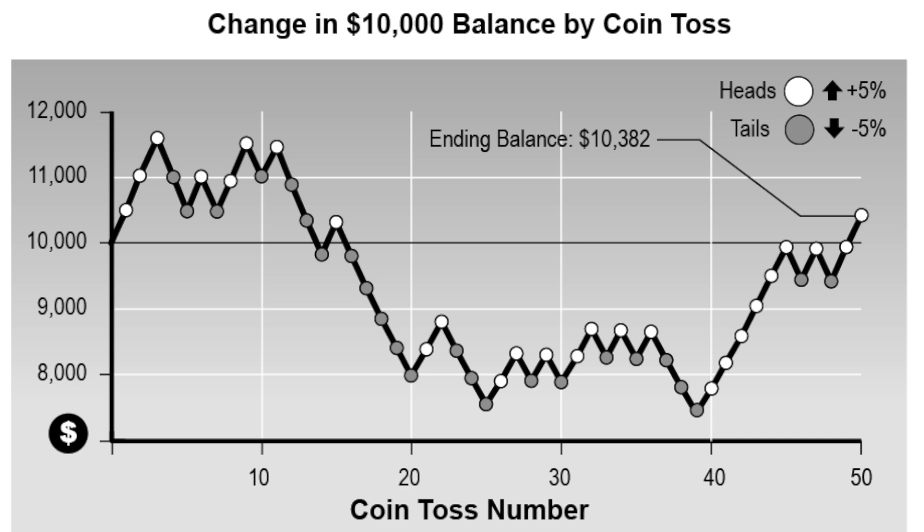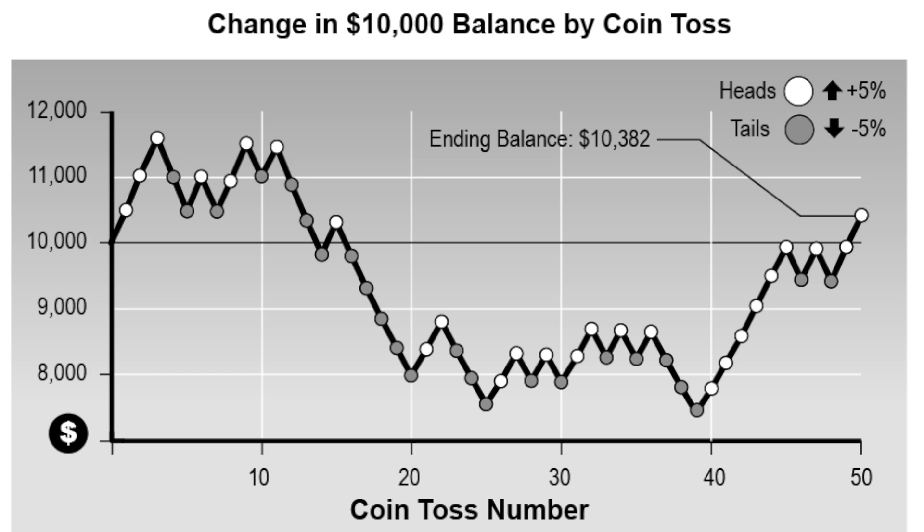We had three head flips in the beginning, sending the line higher, then we got a couple tails in there. We progressed through 50 coin tosses, and the line moved along this route to end at a balance of $10,382 after it started at $10,000 even. Now that we have our simplified version of a random price line, let's add a simplified version of rational reaction to it. When the line rises, we'll sell 5% of our stock position. When the line falls, we'll use our cash balance to buy a 5% increase in our stock position.